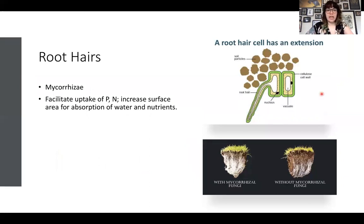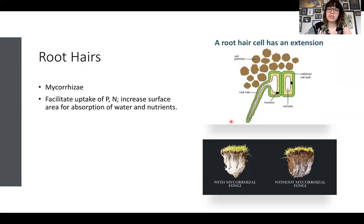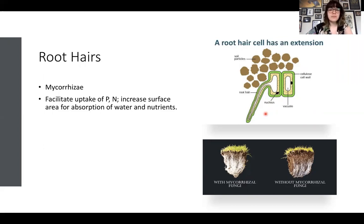Going back to root hairs: they are just projections off of the cell. If you took the vacuole, the cytoplasm, and the cell wall, and pinched off a strand of it and made it really long — that's what the root hair is. It's there to increase the surface area of the cell so that it's better able to take up minerals and water from the soil, which really helps the plant quite a bit.